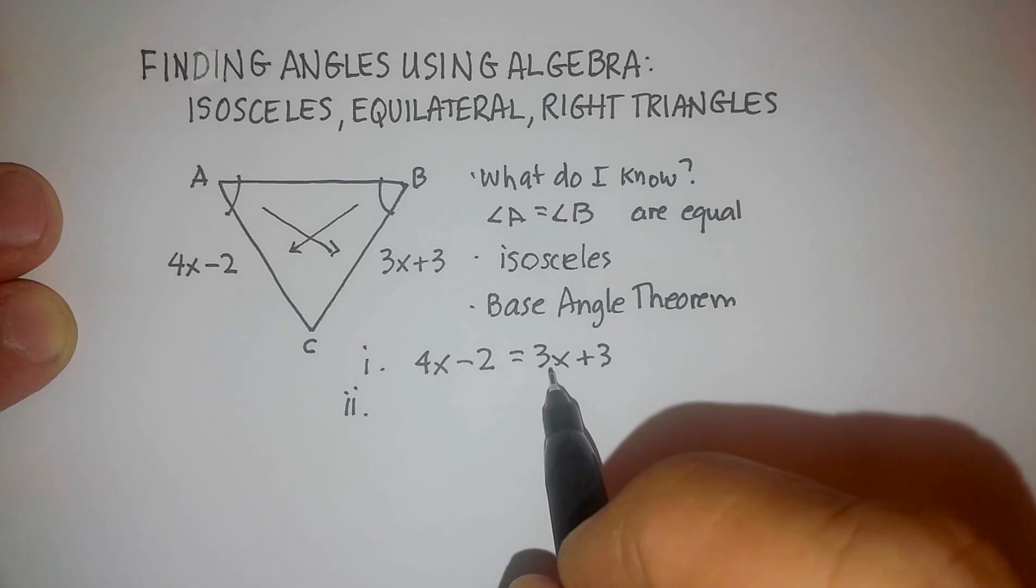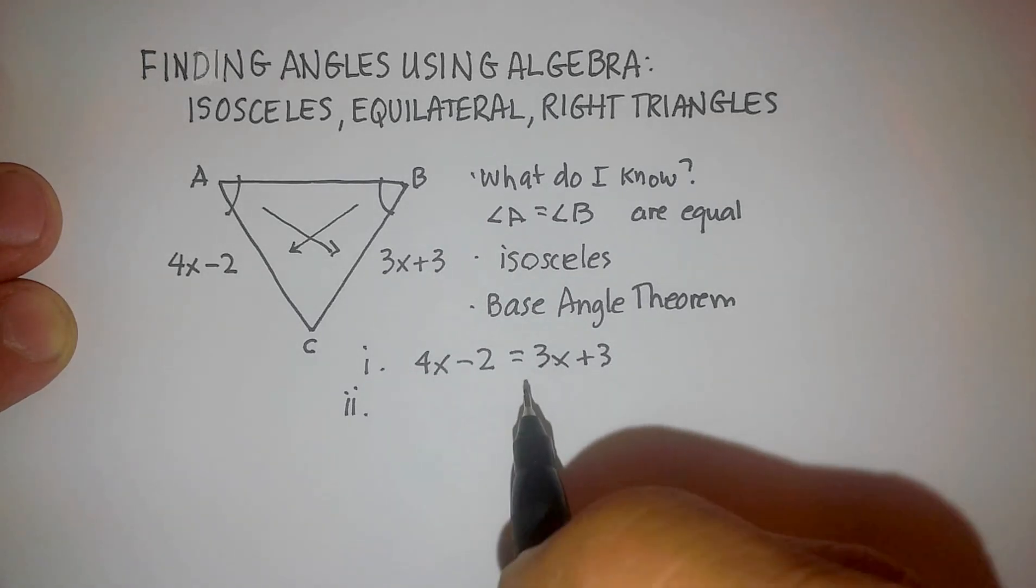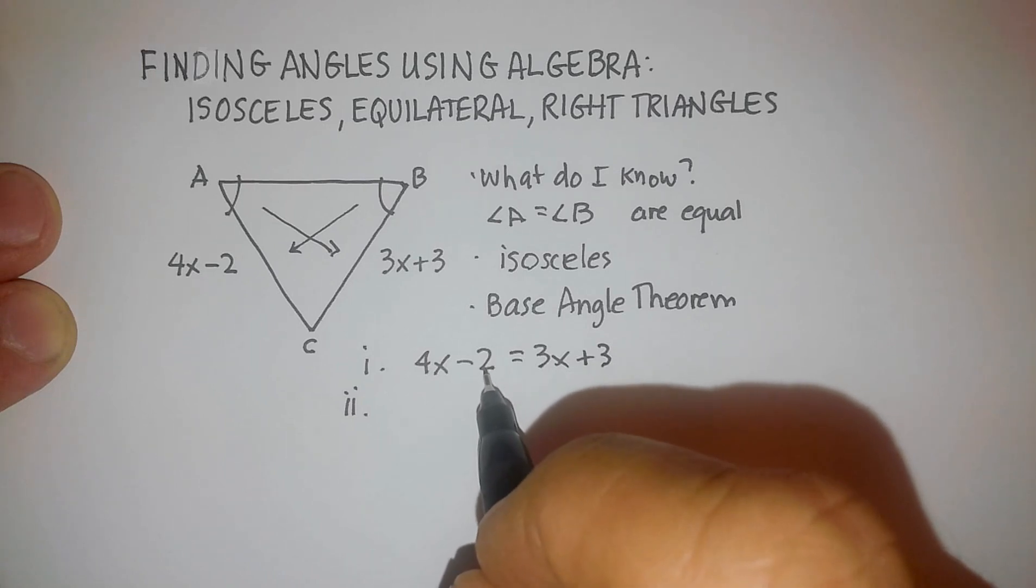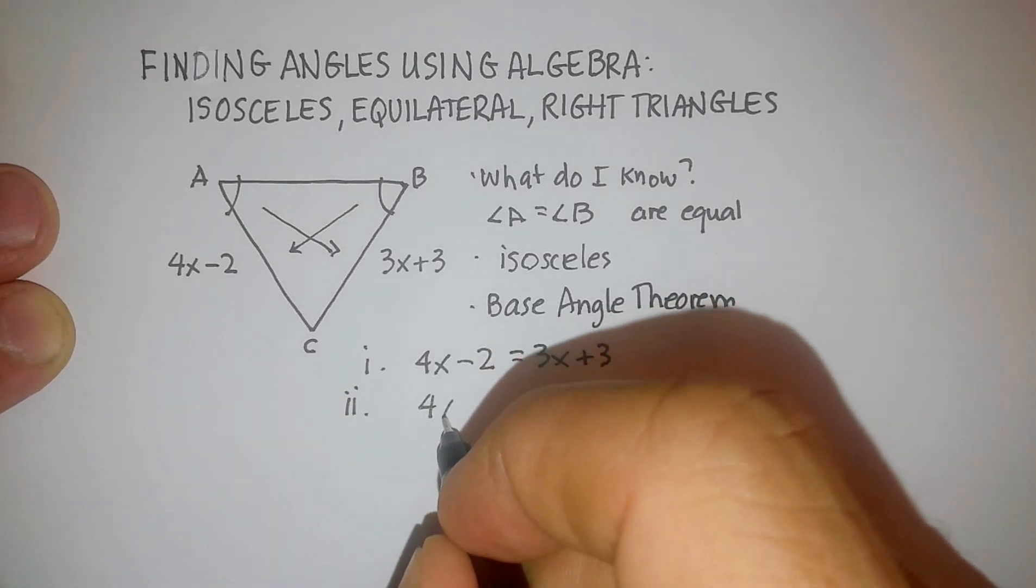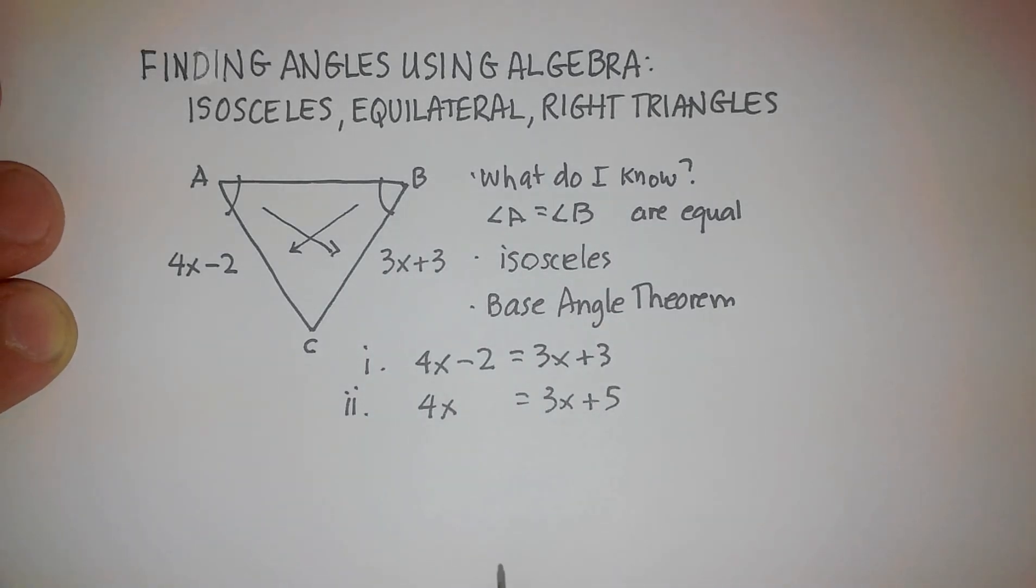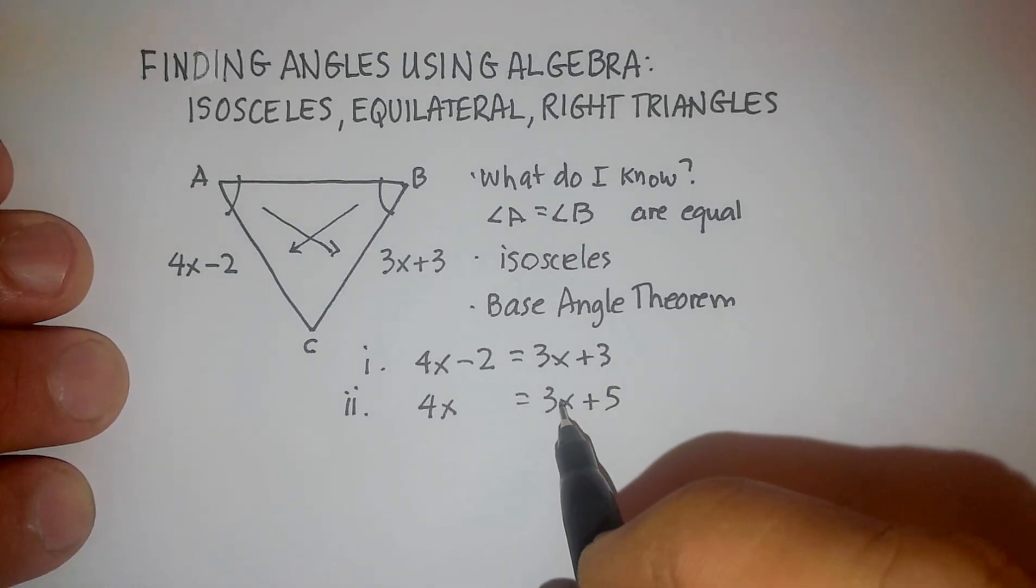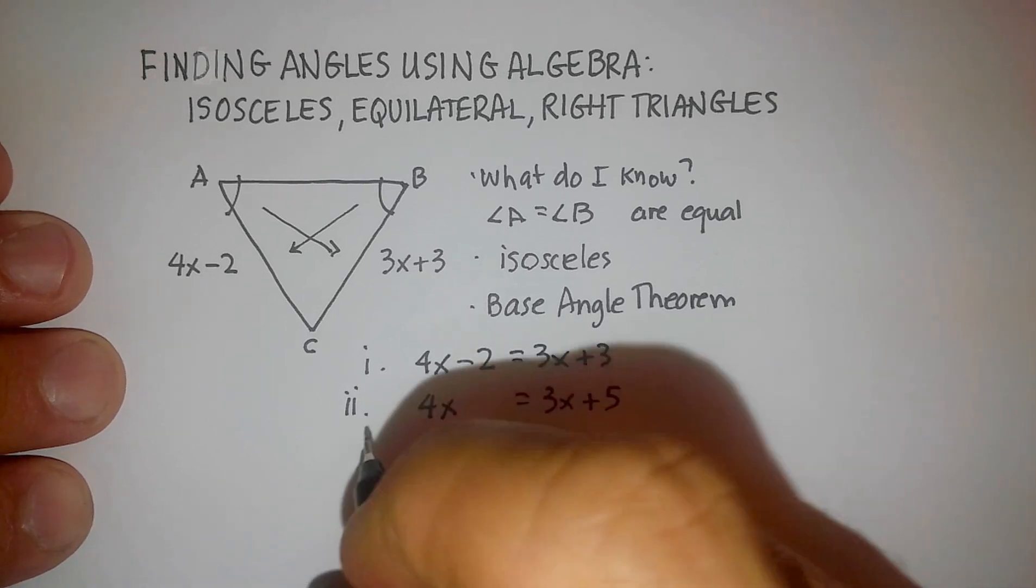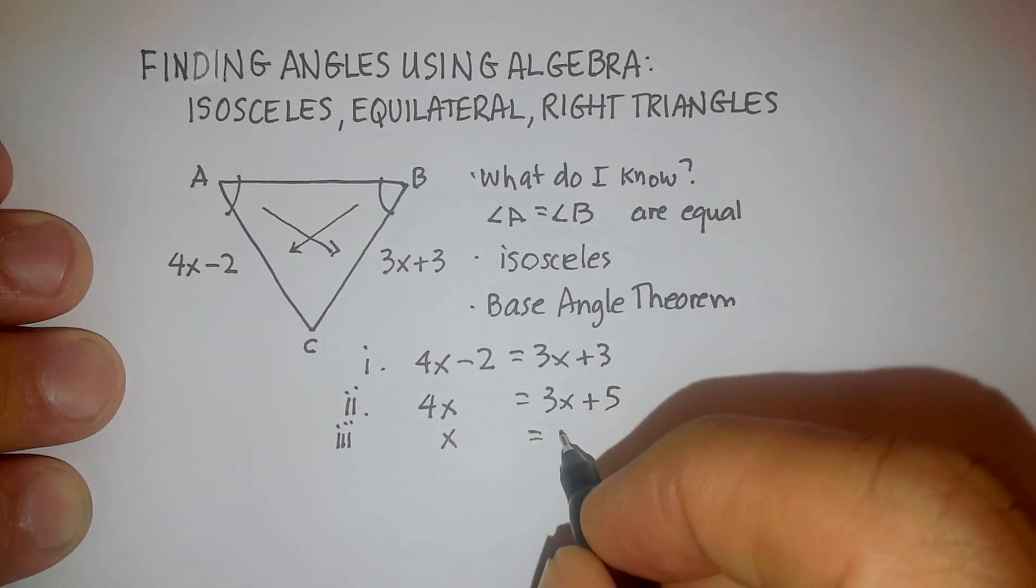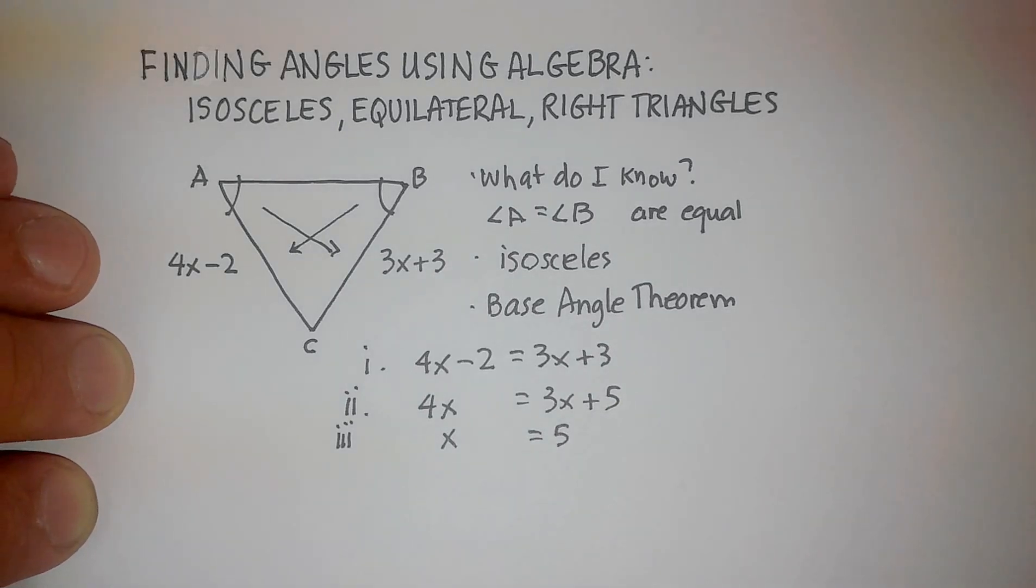So let's get the x's on one side, the numbers on the other side. So I'm going to add 2 to both sides, and that way I'll get rid of this negative 2 here. So that's going to give me 4x is equal to 3x plus 5. And now let's go ahead and put the x onto this side. So let's subtract 3x from both sides, and that's going to give me x is equal to 5.